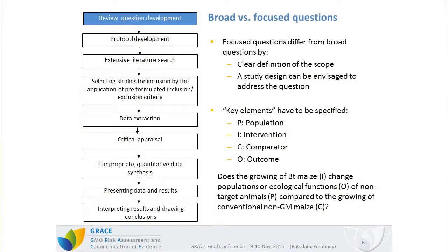The first step is the development of a review question. It has to be stressed that not all questions can be addressed by a systematic review — the question has to be focused. Focused questions differ from broad questions in that they clearly define the scope of the question and that a general study design can be envisaged to address the question. If that is the case, you can be pretty sure the question is focused.